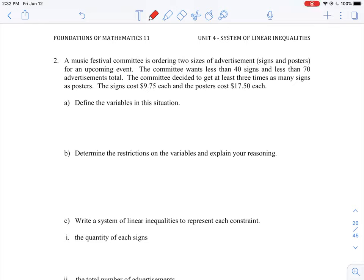Okay, so let's take a look at question number two, which is another optimization problem. This is still lesson three. Let's go through it and look at how we can pick out all the key ideas here. We have a music festival that is ordering two sizes of advertisements, signs and posters for an event. Right away, that should tell us something - we are looking at two types of items that we are going to be optimizing.